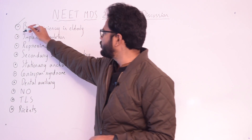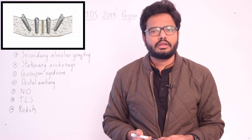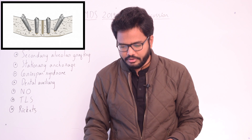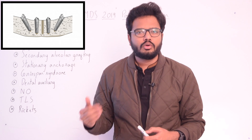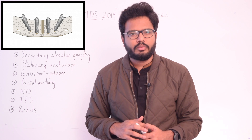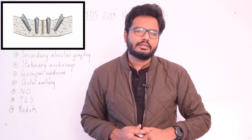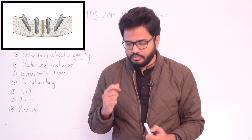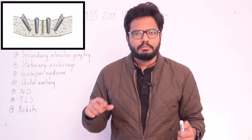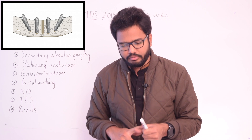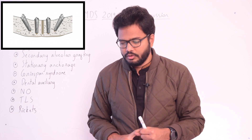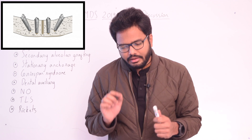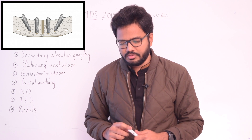Moving on to the next topic: implant angulation. Keywords include mini implant angulation, implant angulation, and orthodontic implant angulation. We'll go through some literature to correlate with the question. The angulation of an implant is an important factor in the management of stress in peri-implant structures. The behavior of bone in the peri-implant region is closely related to direction, magnitude, and concentration of stresses transmitted to the implant.